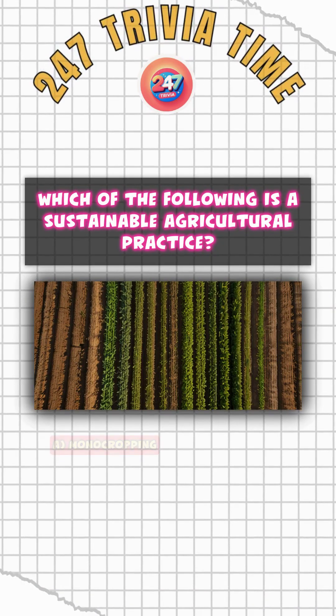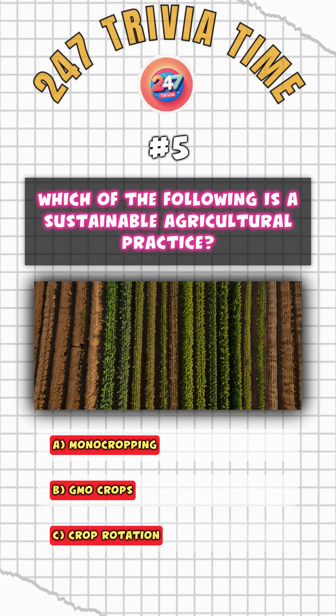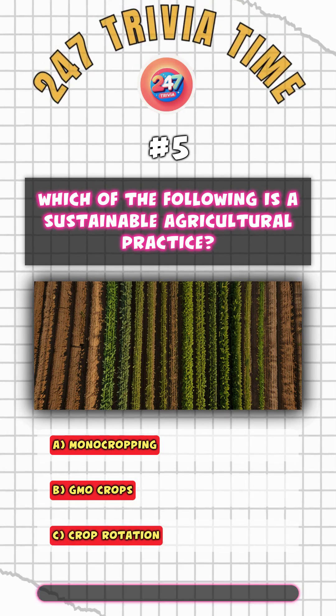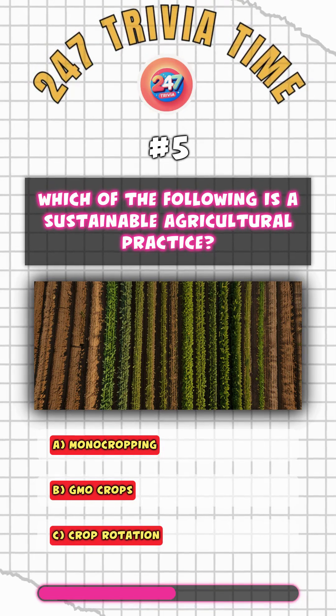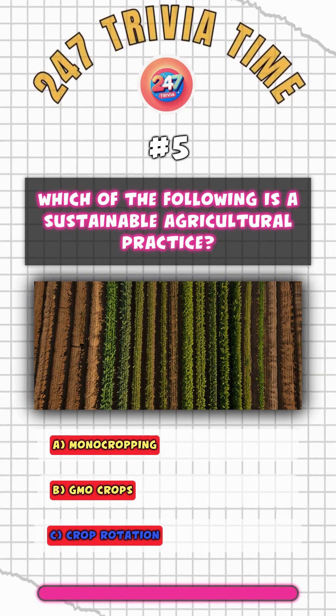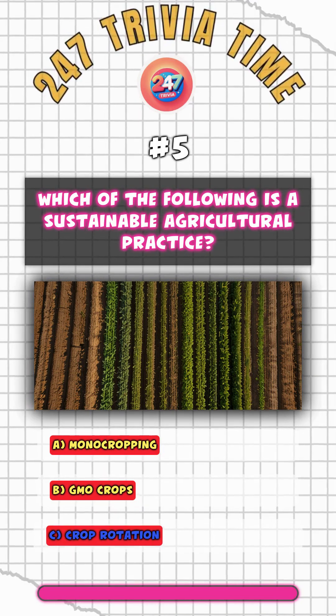Which of the following is a sustainable agricultural practice? C. Crop rotation.